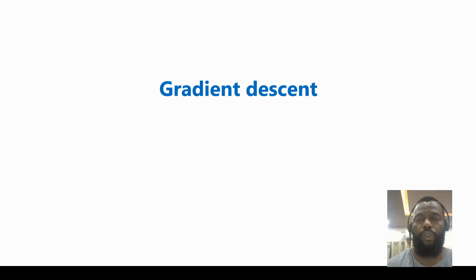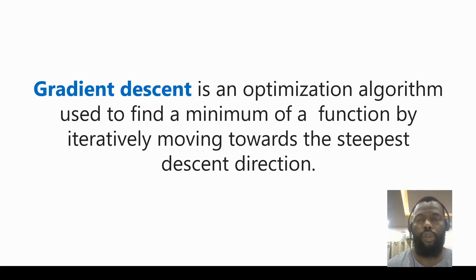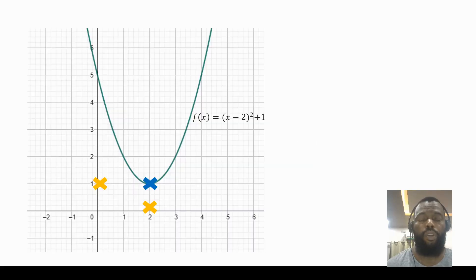Hello everyone, let's talk about gradient descent. Gradient descent is an optimization algorithm used to find the minimum of a function by iteratively moving towards the steepest descent direction. Let's have an example.